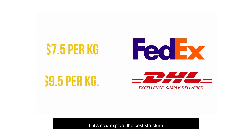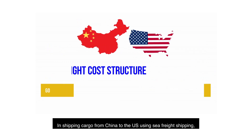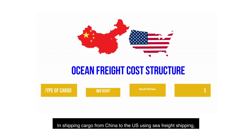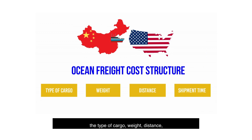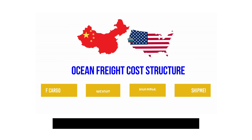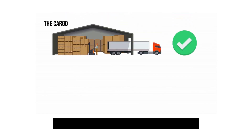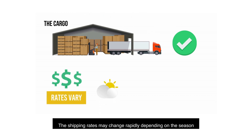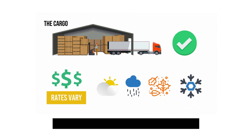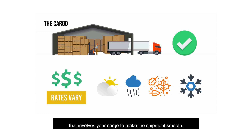Let's explore the cost structure for both ocean freight and air freight. Ocean freight: when shipping cargo from China to the U.S. using sea freight, the type of cargo, weight, distance, and shipment time affect the cost. The cargo — you should know what you are shipping, legally. Cargoes are classified according to an international set of rules. The shipping rates may change rapidly depending on the season and the shipping vessels available, so you need to make sure of the information that involves your cargo to make the shipment smooth.